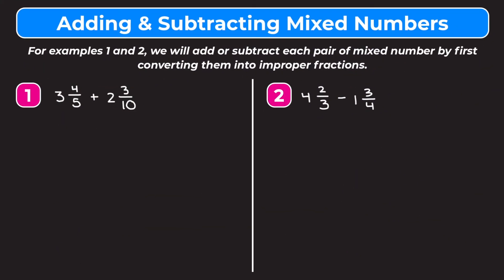In this video we're going to be learning how to add and subtract mixed numbers. For these two problems we're going to add or subtract each pair of mixed numbers by first converting them into improper fractions. I'm going to show you guys two ways that we can add and subtract mixed numbers, and this first method is by converting the fractions into improper fractions and then adding them as we would normally do.